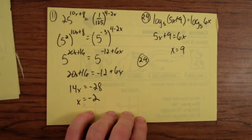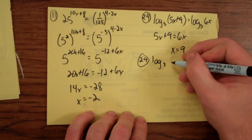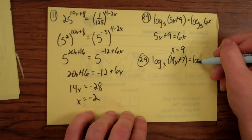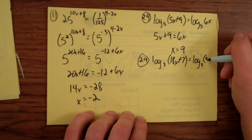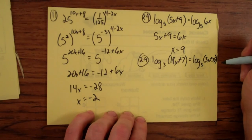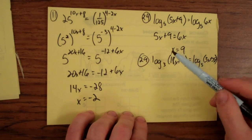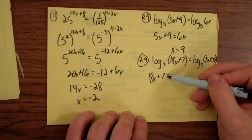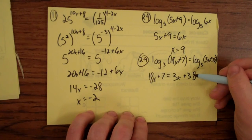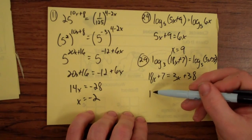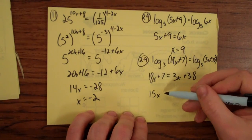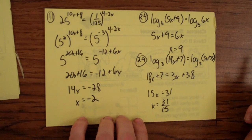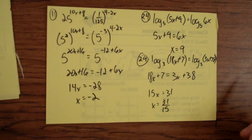29, they're all pretty much the same. Log base 3 of 18x plus 7 equals log base 3 of 3x plus 38. So, really big, tricky things here, right? It's a log of something, it was a log of something, they both have the same base of 3, so I just take these things here in parentheses, set them equal to each other. And solve for x. So, subtract 3x from both sides, and we get 15x, subtract 7 from both sides, we get 31, and x equals 31 over 15. So, I will take that, and I'll join you in the next video.